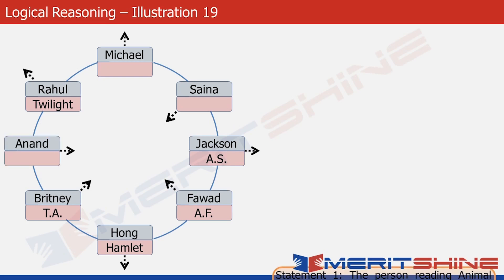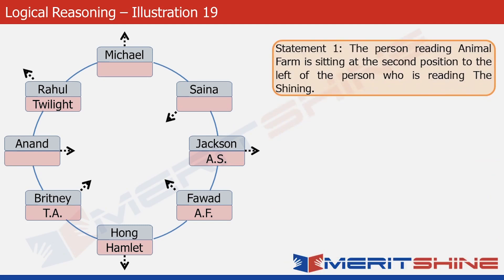Let's go to statement one. It tells us that the person reading Animal Farm is sitting at the second position to the left of the person reading The Shining. Fawad is reading Animal Farm, and looking at his position we can clearly see that the cell two positions to his right is occupied by Saina. So Saina is reading The Shining — let's write TS in her cell.